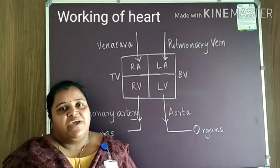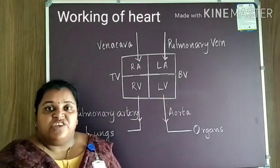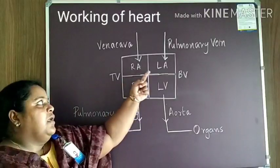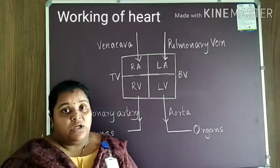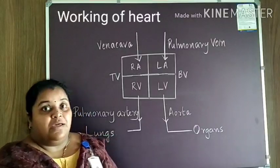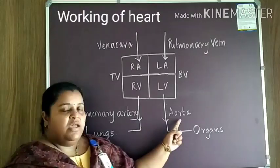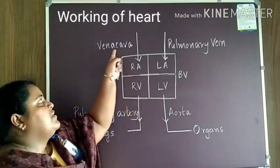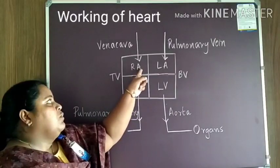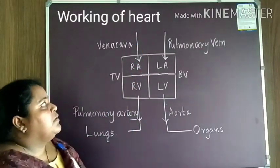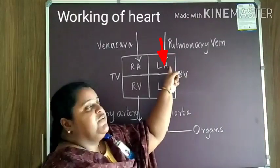The next topic we have to discuss is the working of the heart. We already learnt that there are four chambers in the heart: right atrium, left atrium, right ventricle, and left ventricle. We also learnt the blood vessels related to the heart — they are vena cava, pulmonary vein, pulmonary artery, and aorta. Vena cava brings impure blood rich in carbon dioxide from different parts of the body and opens into the right atrium. The pulmonary vein carries pure blood from the lungs and opens into the left atrium.